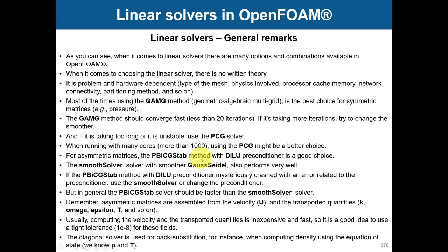For asymmetric matrices — velocity, k, omega, scalars, volume fraction — you can use PBiCGStab with a suitable preconditioner. This is a good choice and probably 99% of the time it will work fine. Solving for asymmetric matrices is relatively inexpensive and fast. Instead, all the effort is in solving for pressure — that is the expensive equation. Pressure is always a symmetric matrix, while velocity and all transported quantities such as k, omega, epsilon, scalars, and volume fraction are asymmetric.